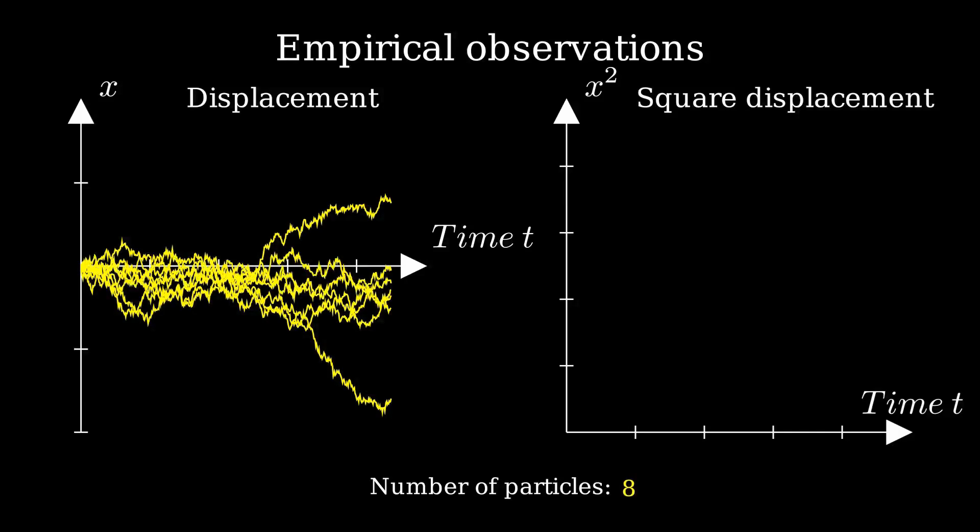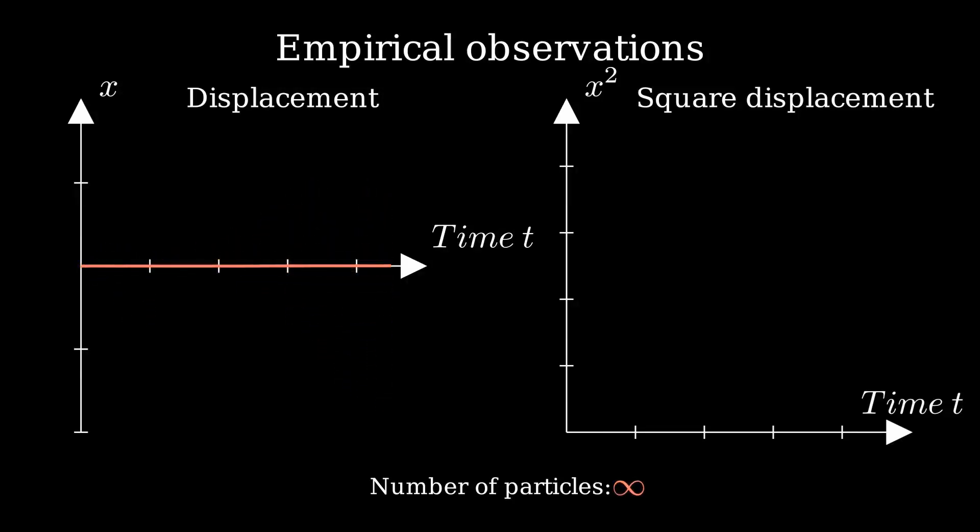Remarkably, if we average all of these trajectories, the resulting average path shows no net motion at all.